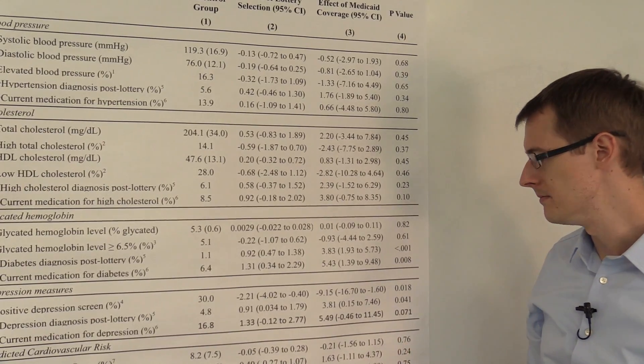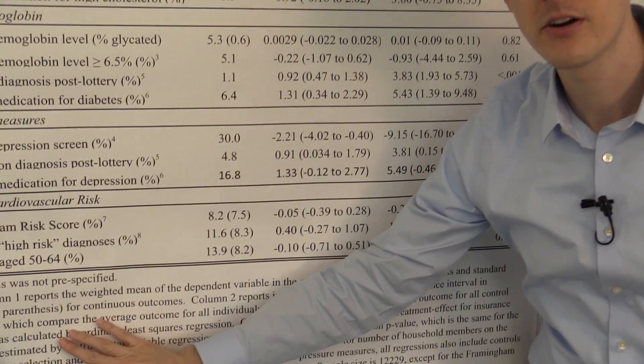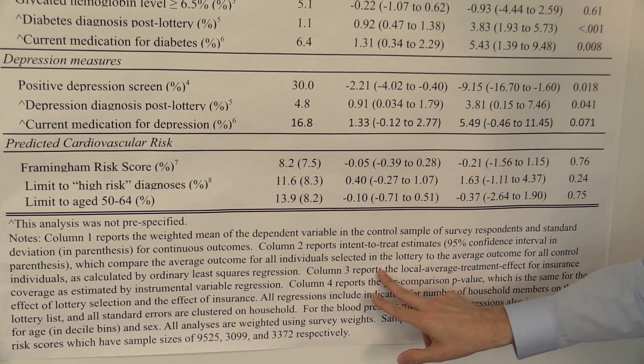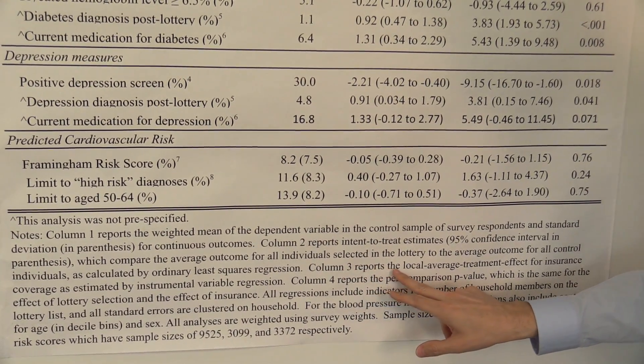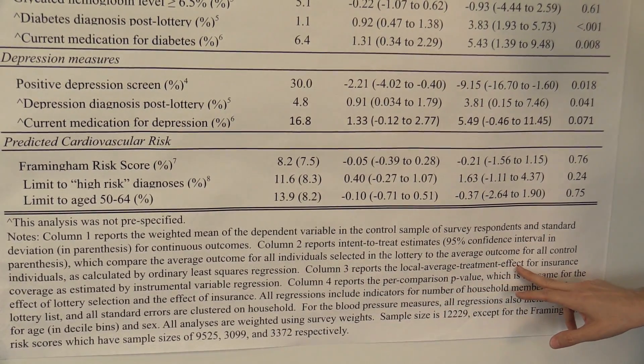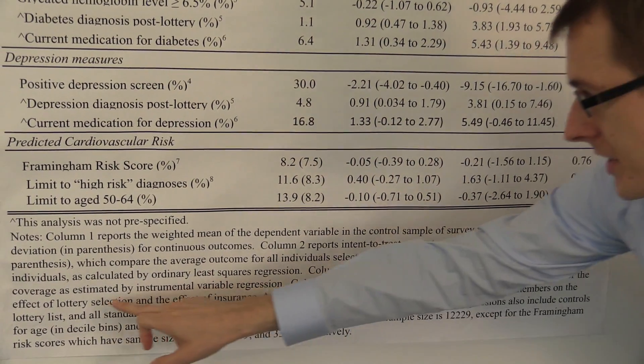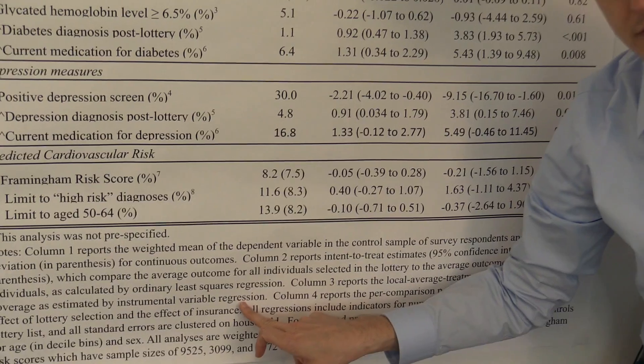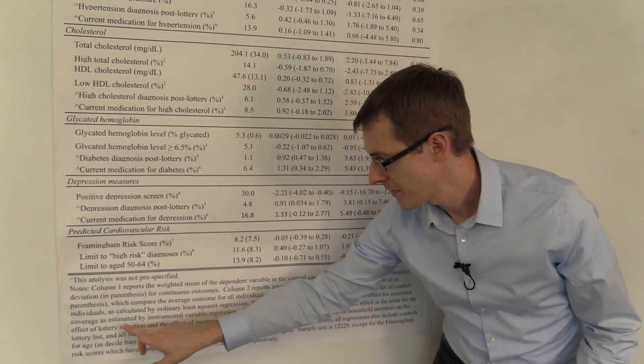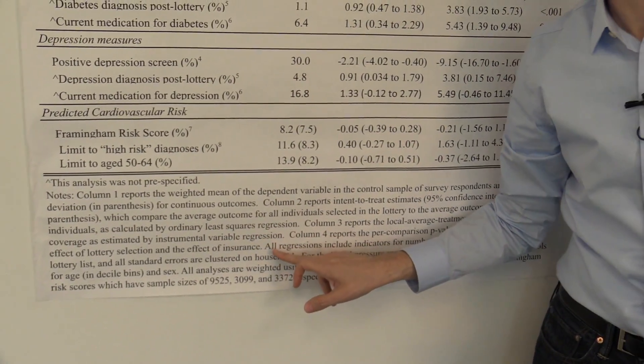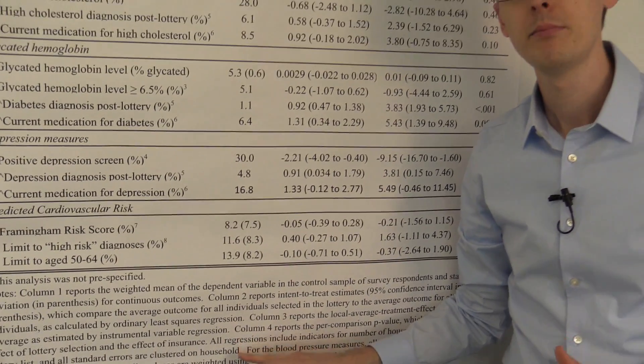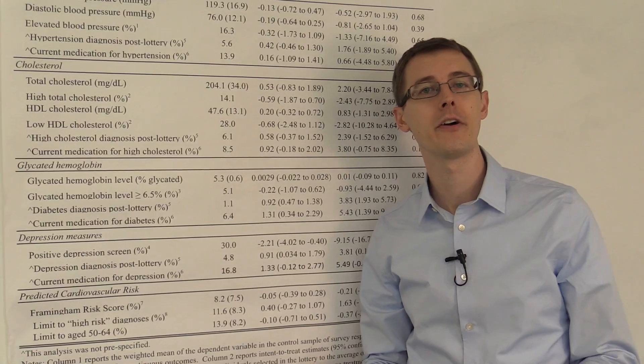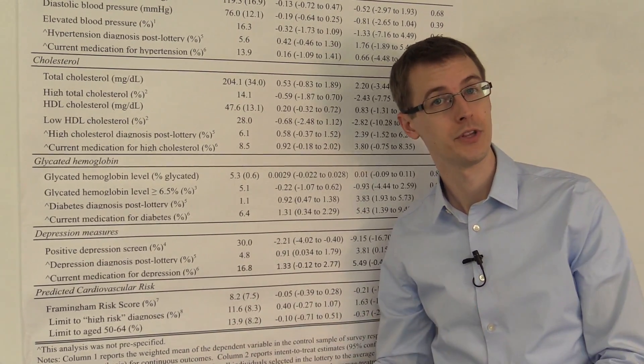Where do these numbers come from? Well, if we look down here in the footnotes, column 3 reports the local average treatment effect for insurance coverage as estimated by instrumental variable regression. So two points. First, estimated by instrumental variable regression. That's a little vague, but what they mean is they're doing two-stage least squares. And they make it clear in the body text of the paper that that's what they're doing.